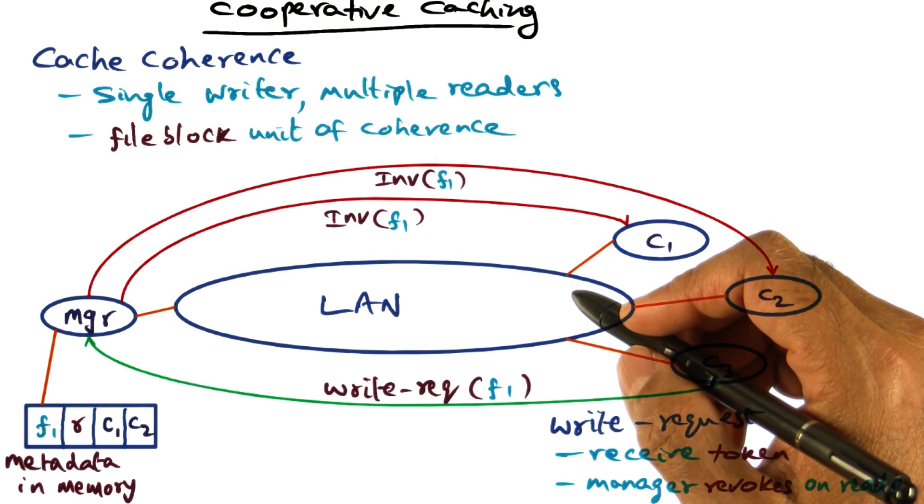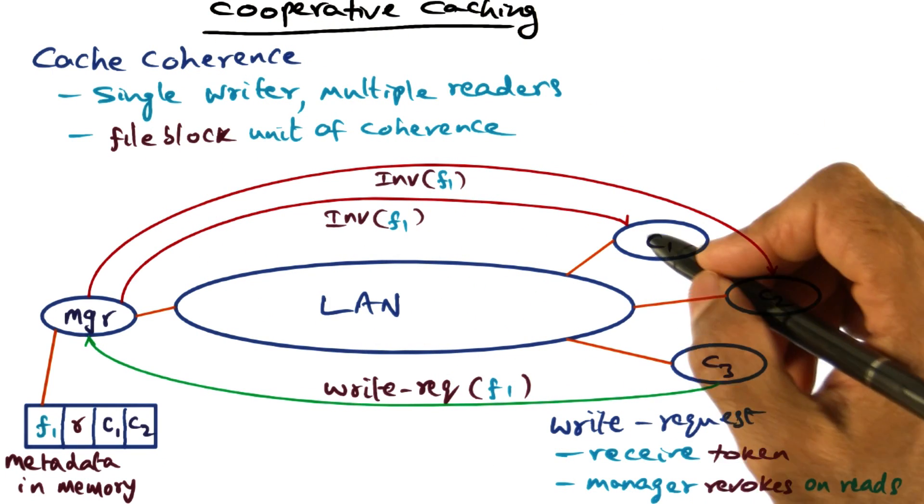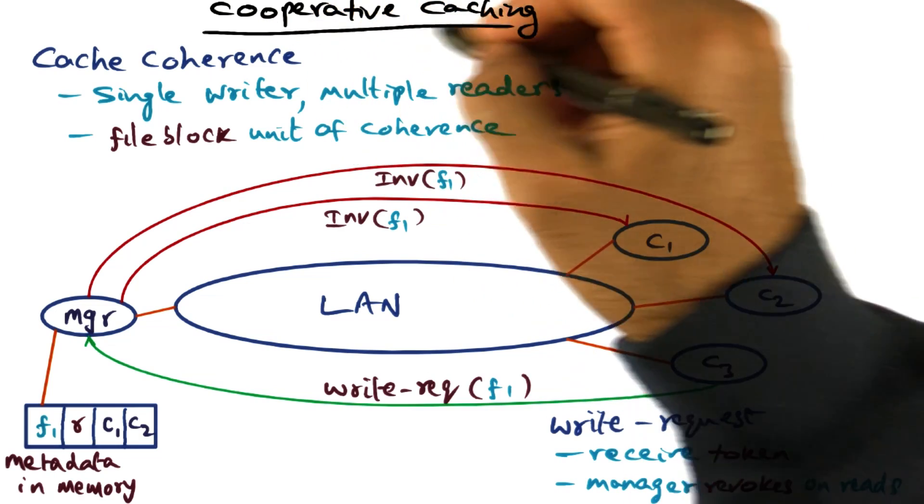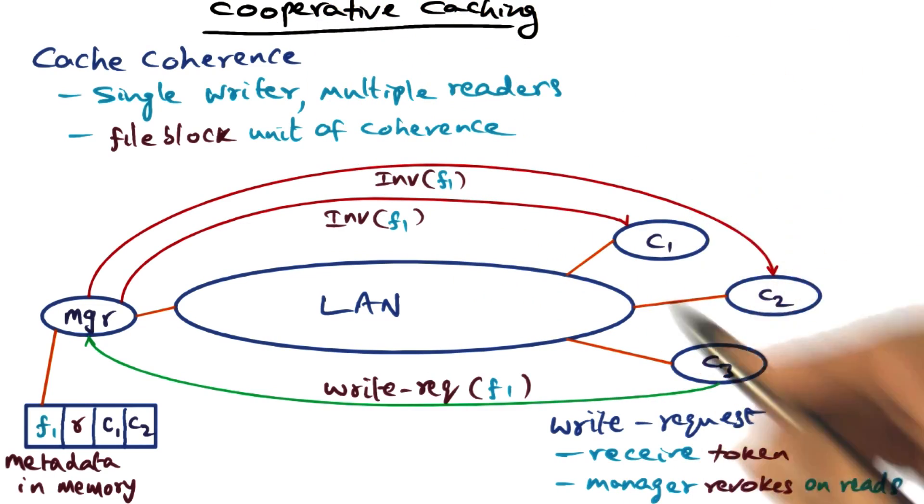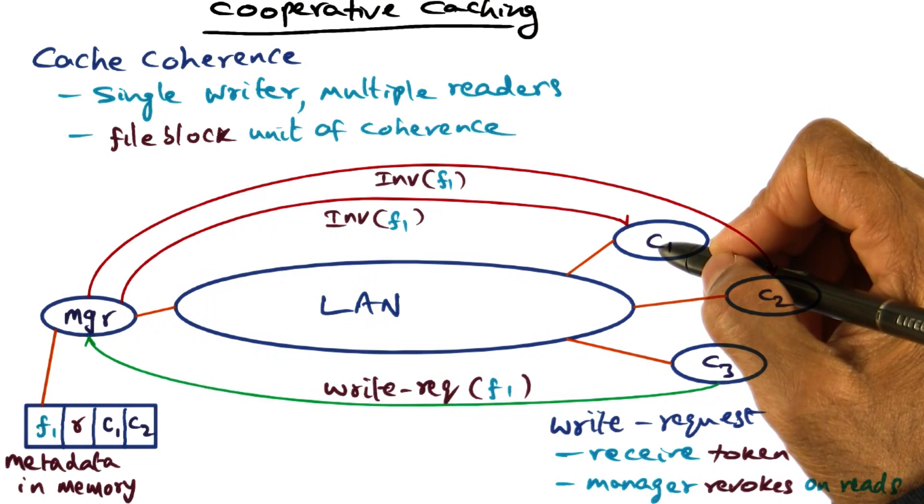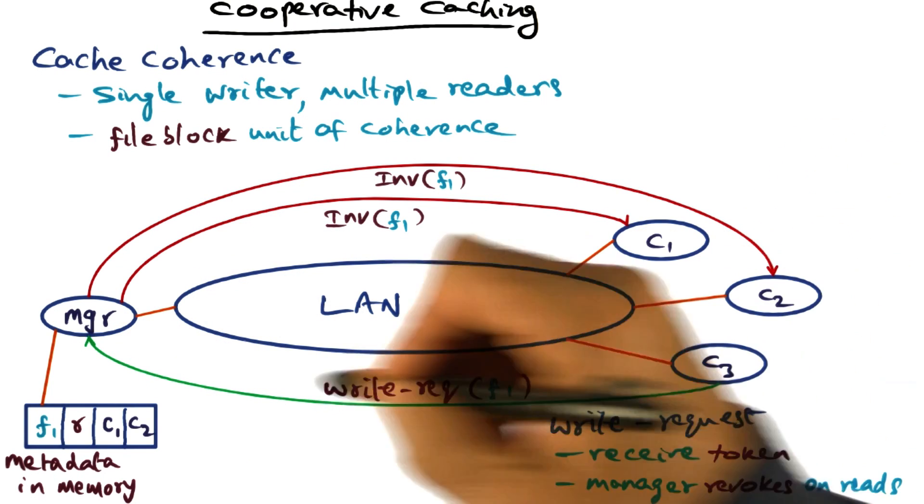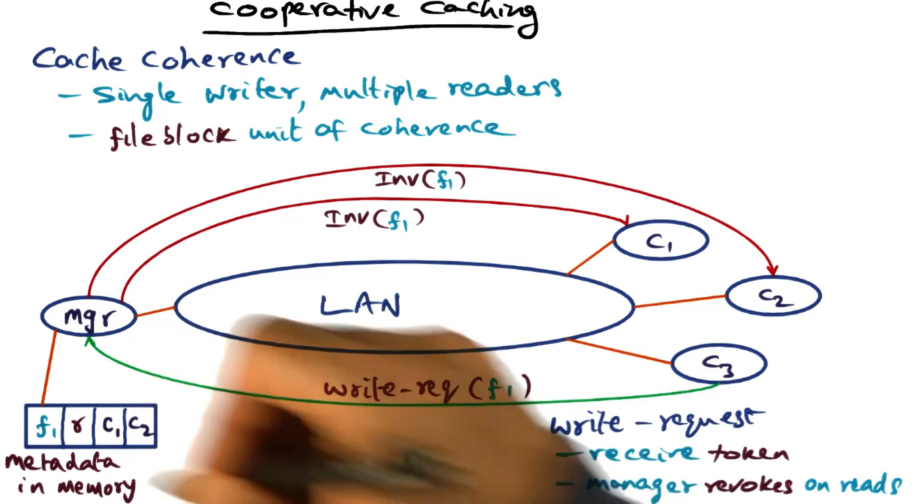And using the fact that copies of the file is existing in multiple clients, XFS exploits that fact to do cooperative caching. What that means is that if a client is currently having a copy of the file, let's say after this interchange, C3 has a copy of the file that it is also writing to...